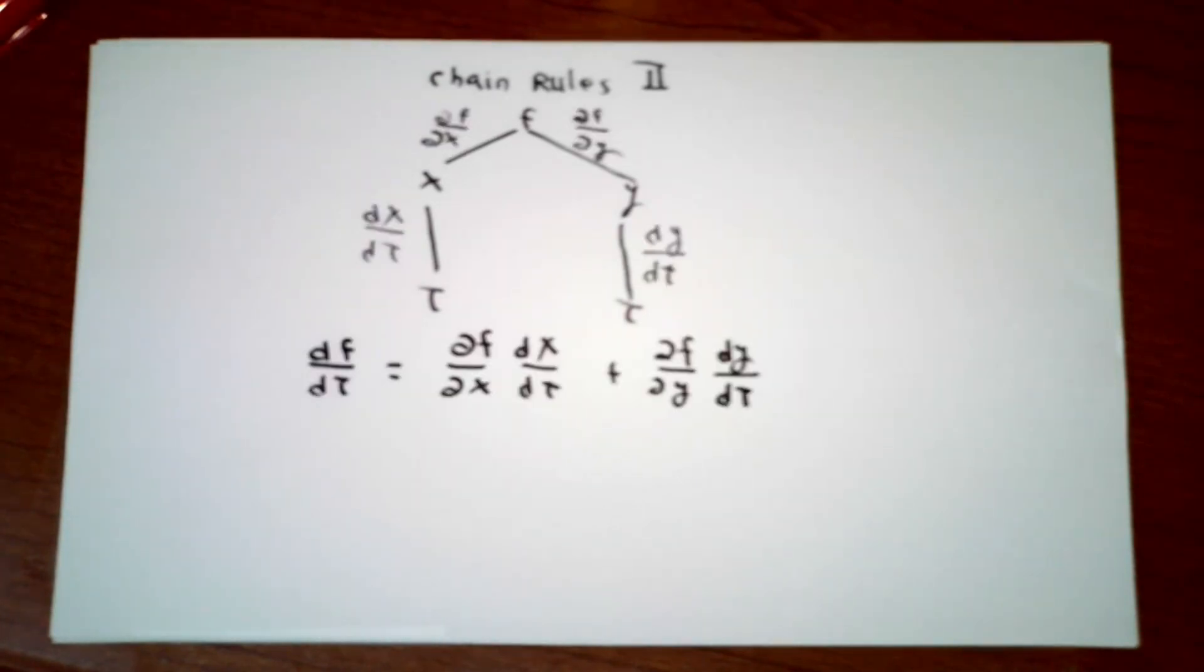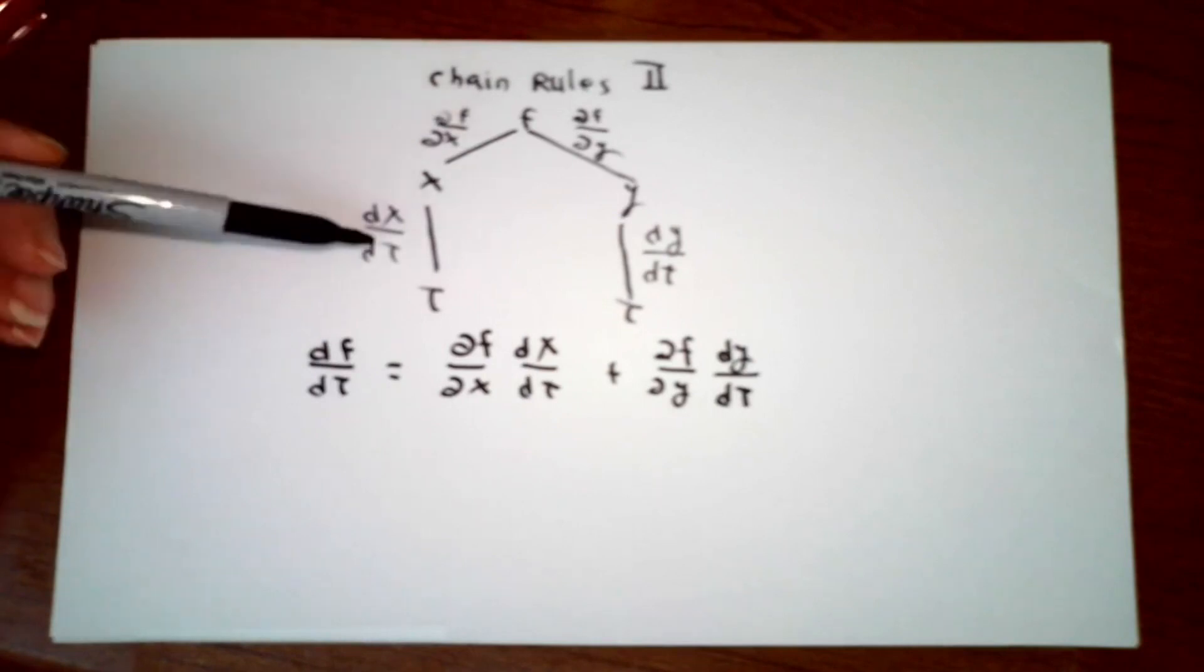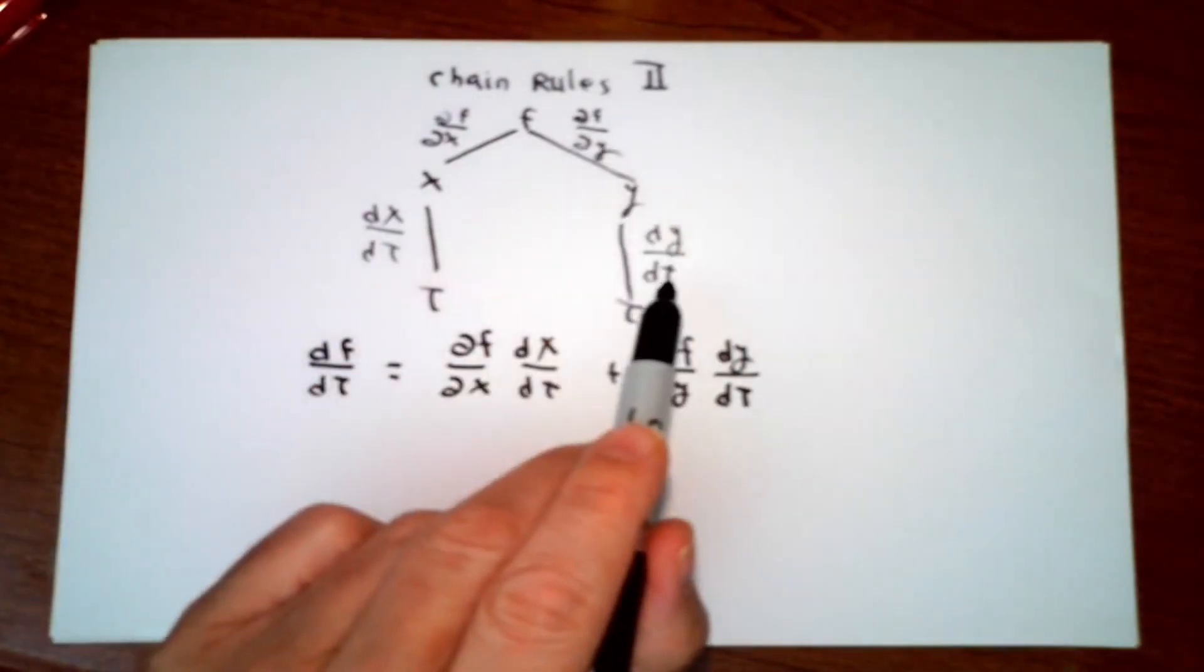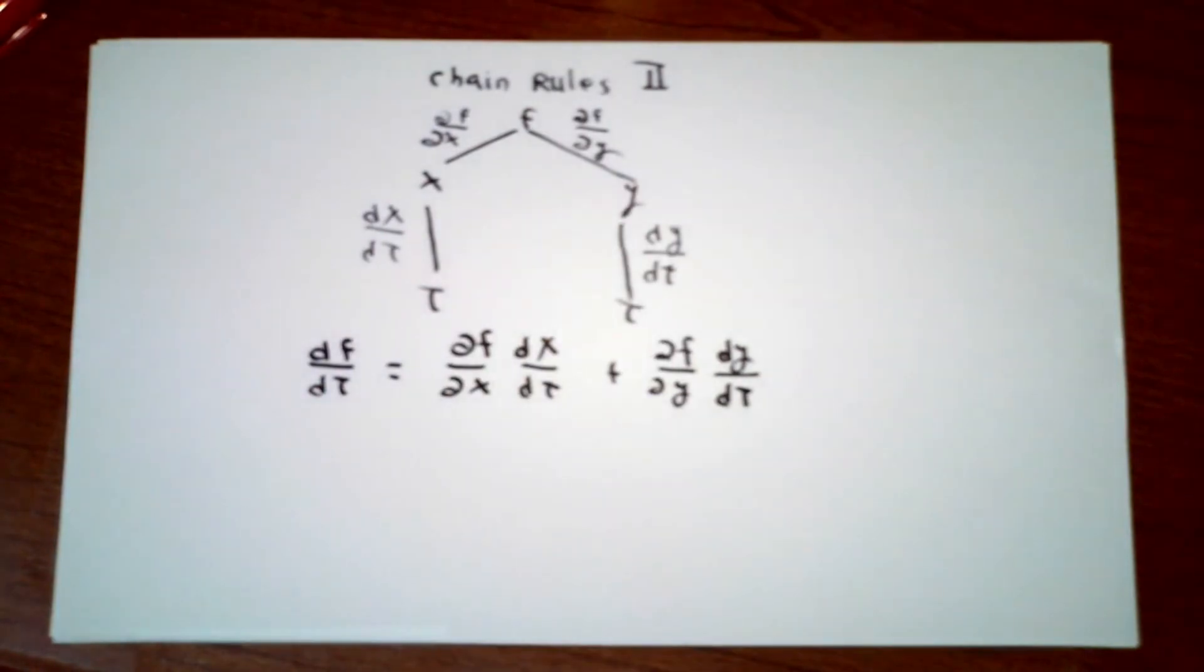The total rate of change of function value f with respect to changes in variable t is then given by this formula obtained by multiplying that by that, multiplying that by that, and adding the contributions together.